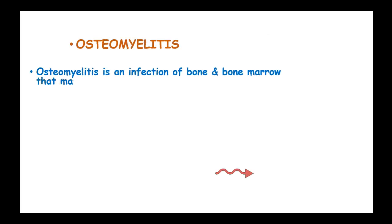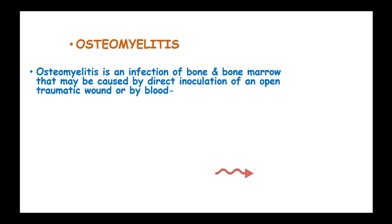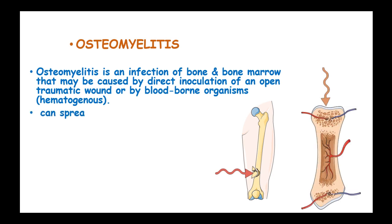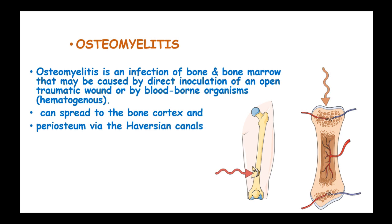Osteomyelitis refers to inflammation and infection of the bone and bone marrow that can be caused by direct inoculation of the open traumatic wound or by blood-borne organisms through the hematogenous route. This can spread through the bone cortex and the periosteum via the Haversian canals.